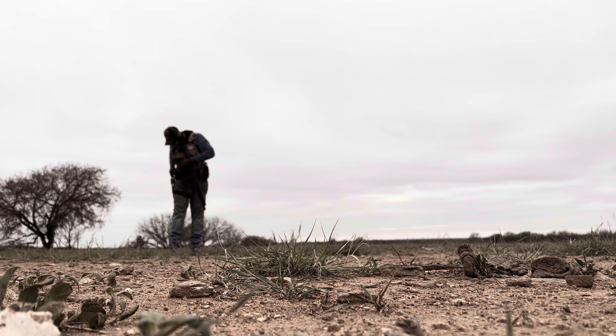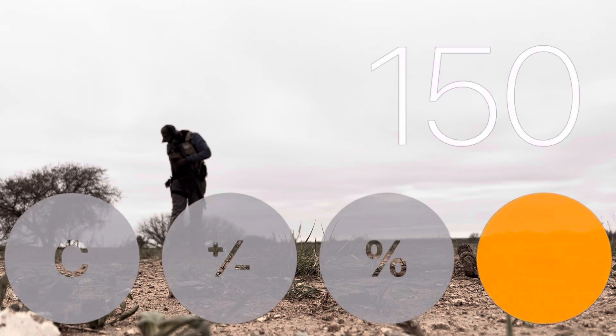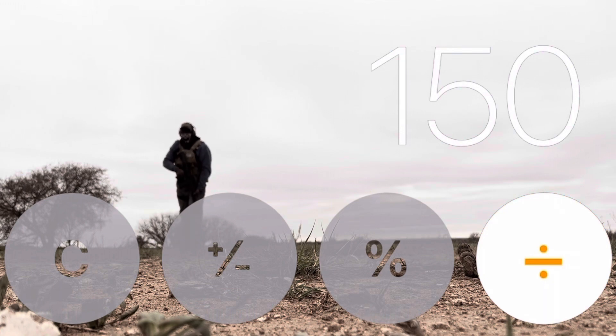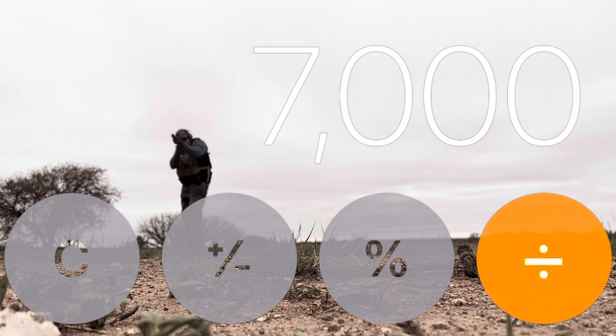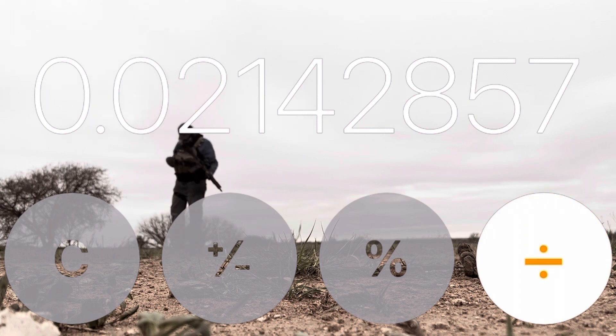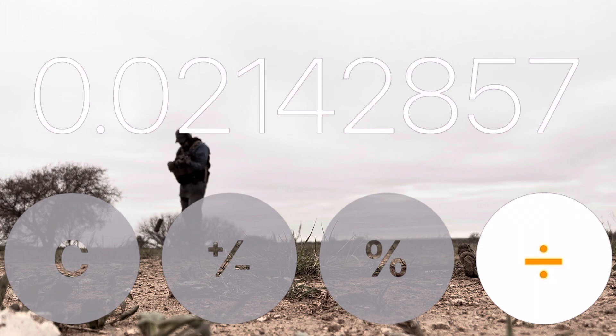Don't divide that yet. Next thing you're going to do is put in the number 7000 and divide that to get the next number. Then you're going to put in the diameter of the bullet - it's .308, so 0.308.